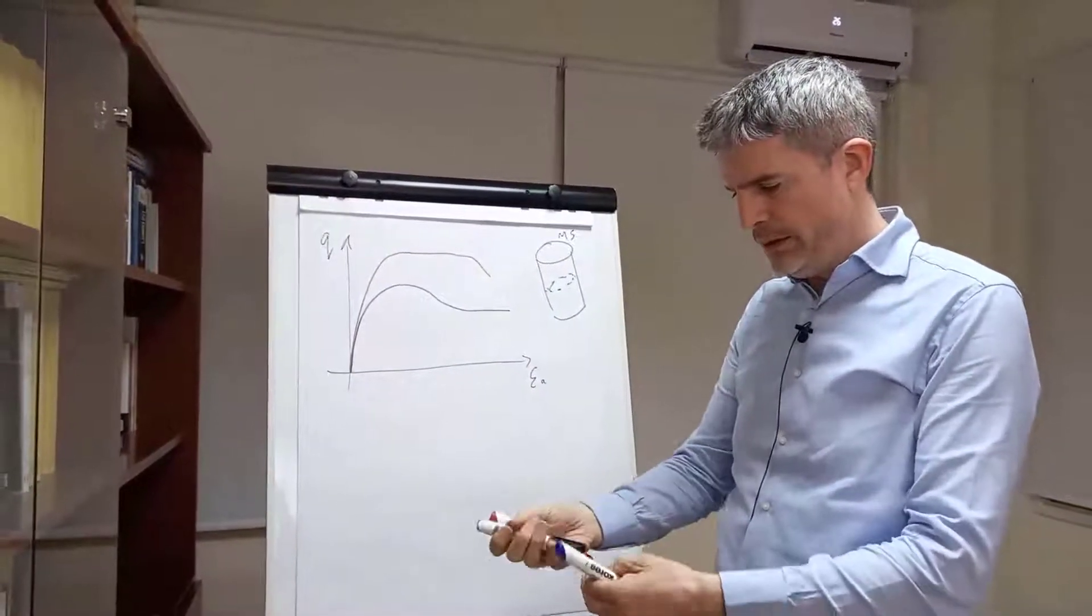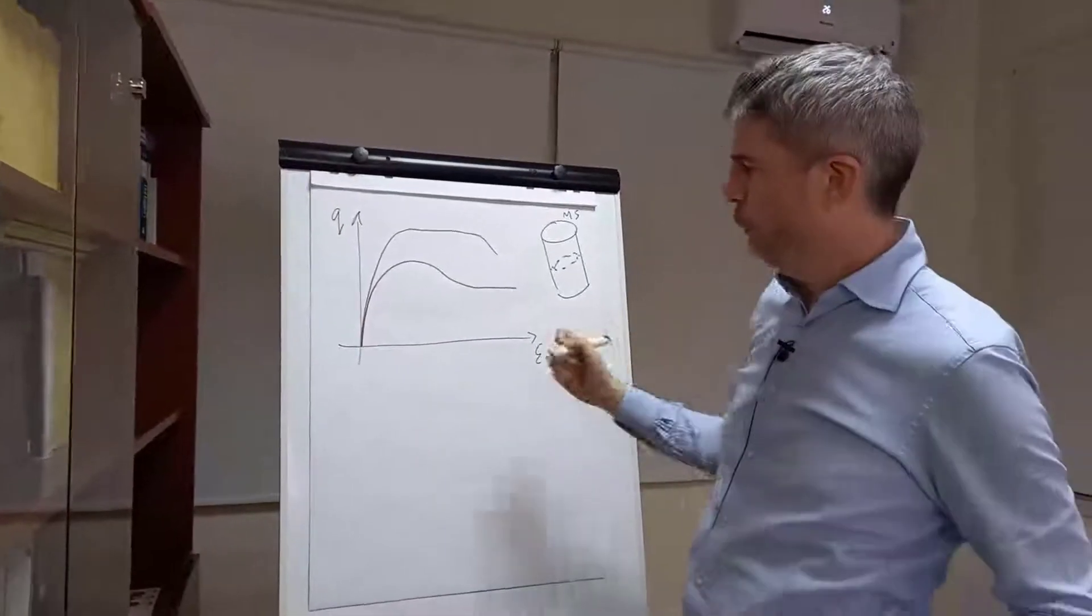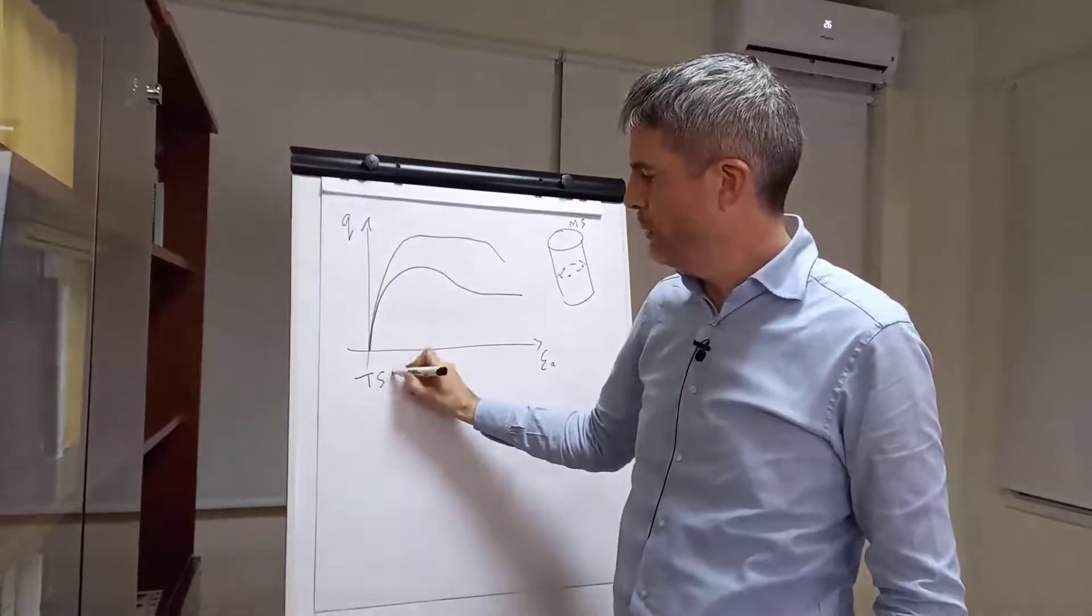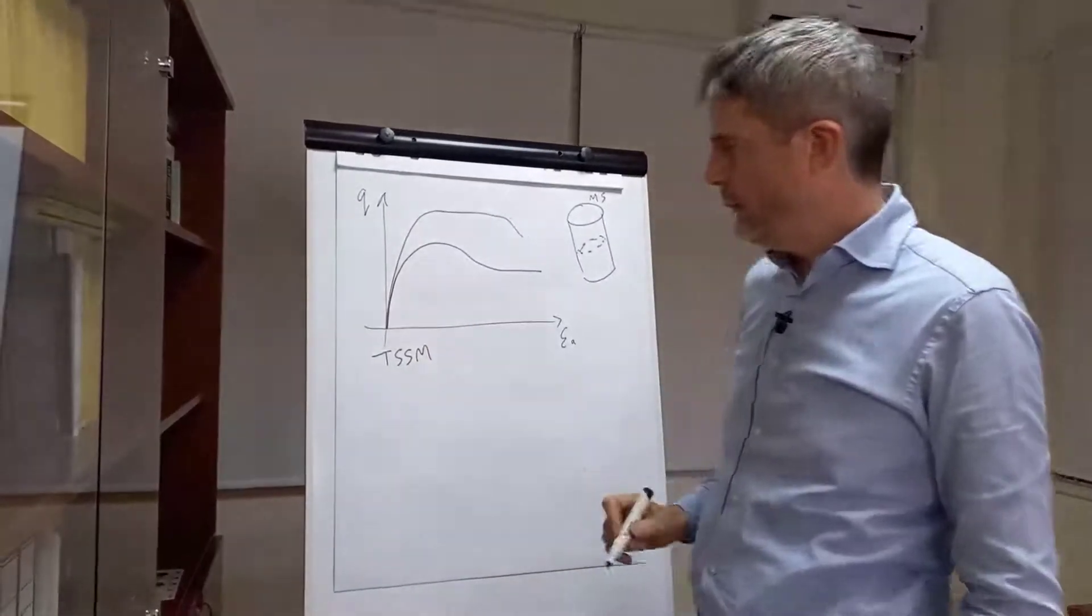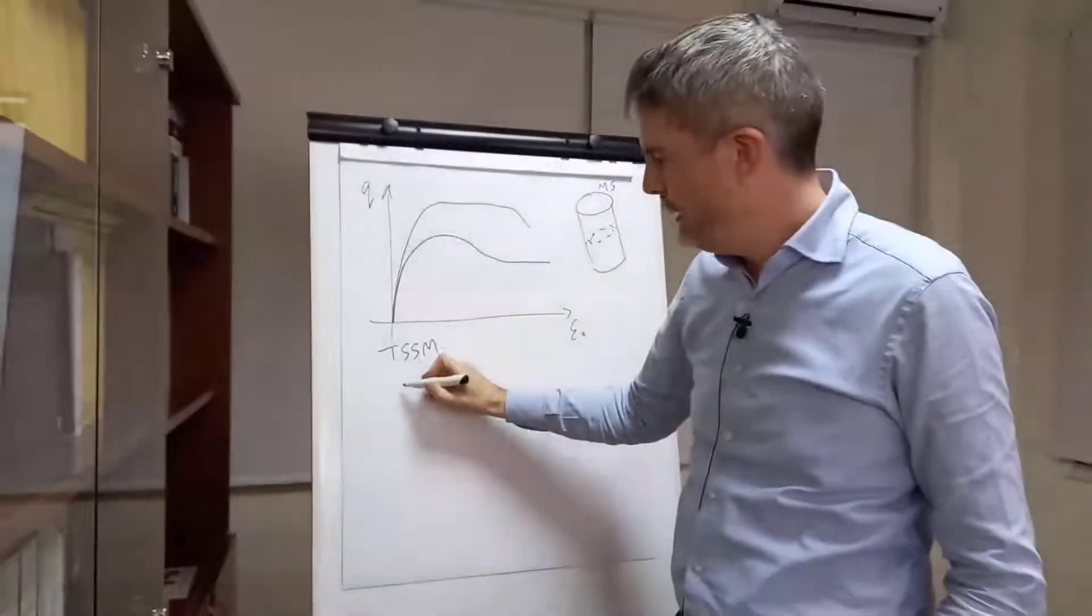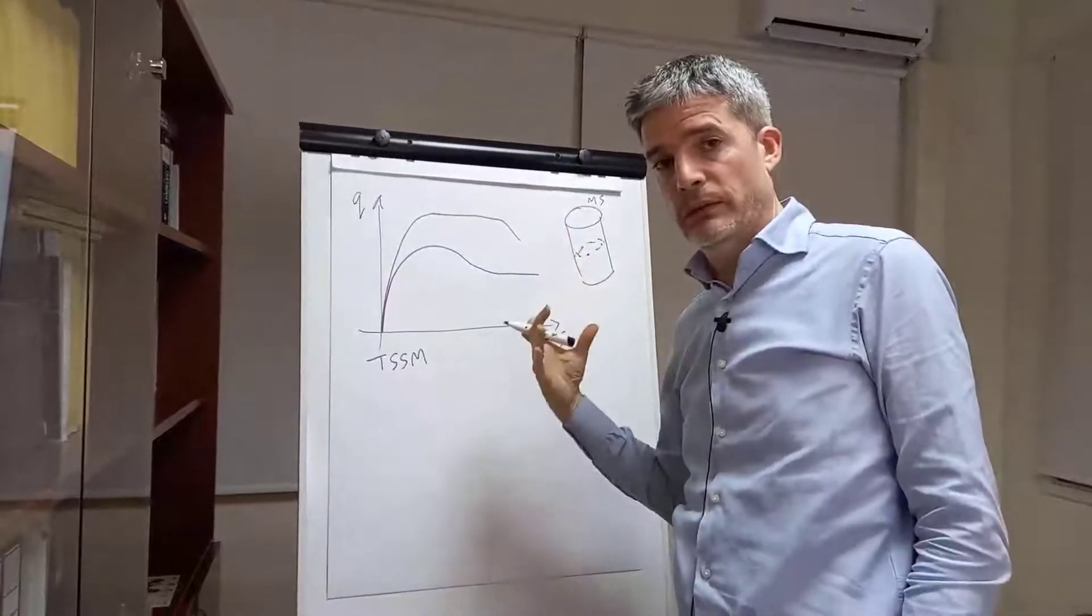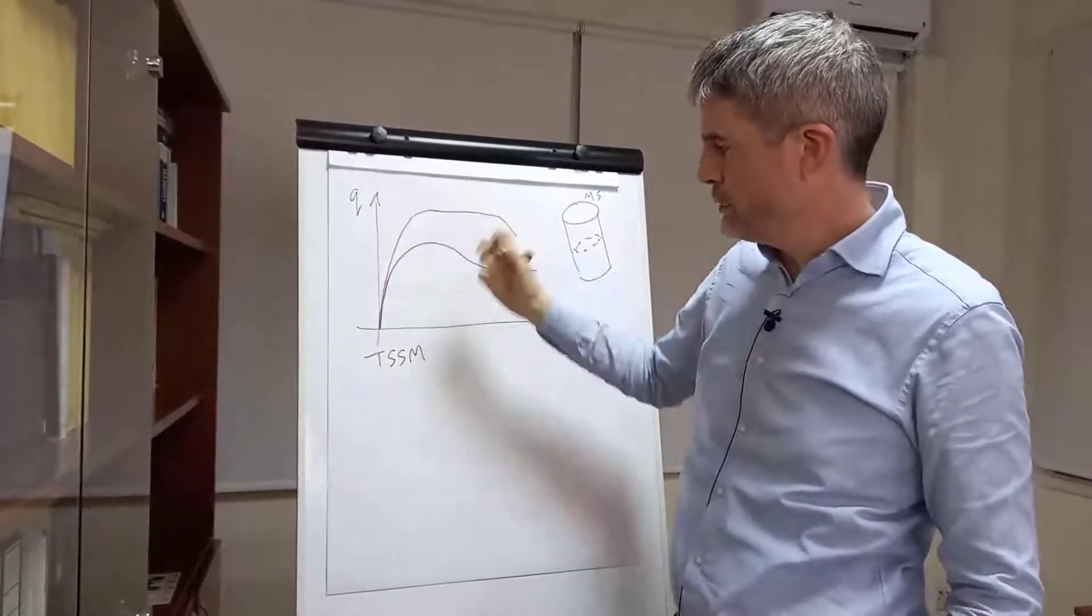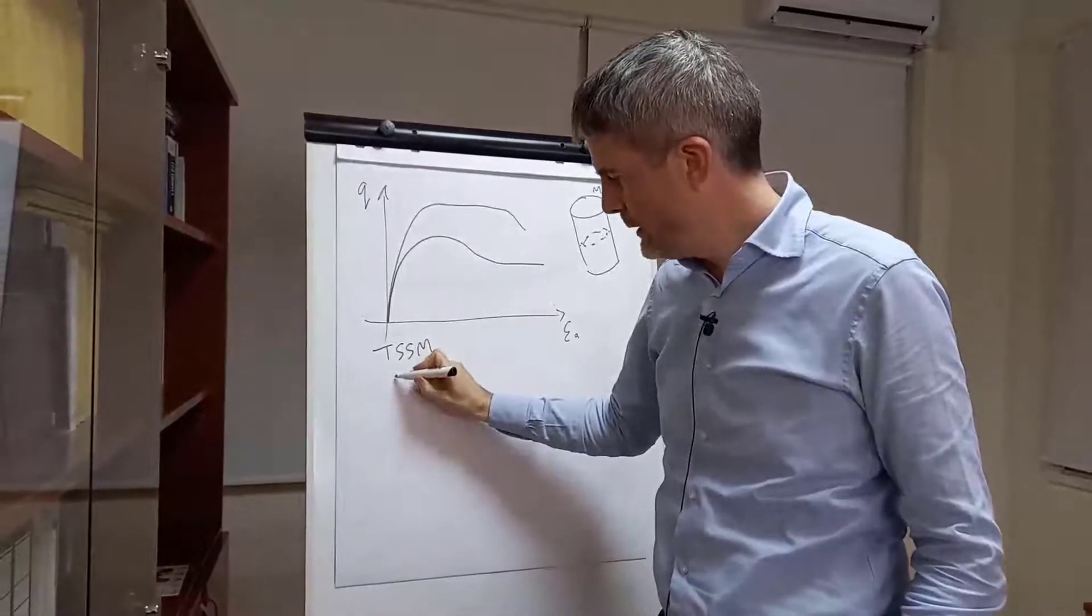Well, we developed our own constitutive model called the TENSAR-stabilized soil model, TSSM. We represent the behavior in terms of failure envelopes, because that is the most important part of the behavior to account for, is the increase in strength. So, the particular feature of this model is the strength envelope.